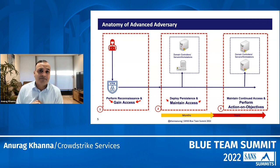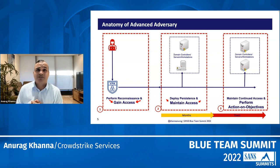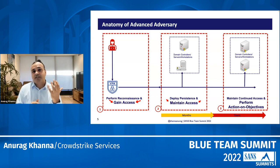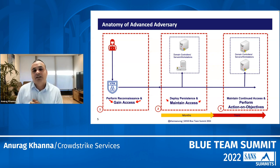Once they have deployed persistence mechanisms throughout the environment, they move on to maintaining access — continually making sure that access is not removed — and performing action on objectives, which is cyber espionage often. These phases of maintaining access and performing action on objectives often span months and years. I've seen dwell time — the time from when the threat actor gained access to when they were detected — being years. Recently I was working on a case attributed to a Chinese nexus adversary where the dwell time went back to eight years.